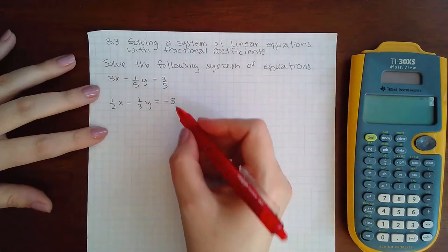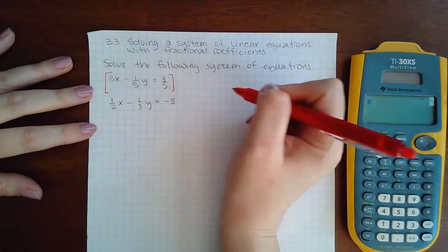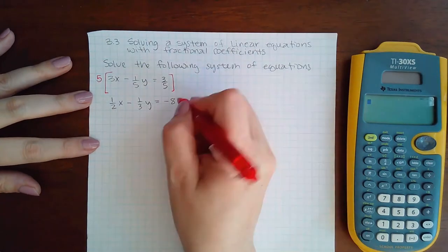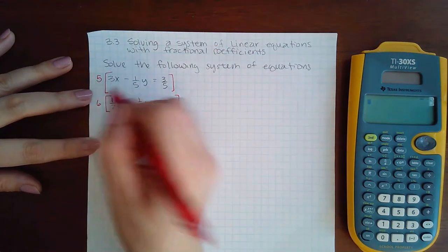I would multiply every single one of these terms by the LCD, which happens to be 5 for the top equation. For the bottom, I would multiply by the LCD which happens to be 6.